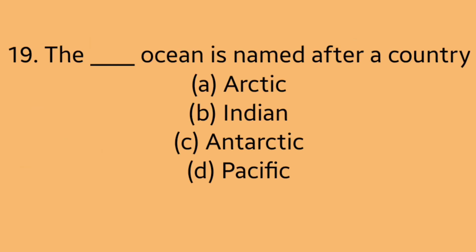Question 19: The ocean named after a country is? Option A: Arctic. Option B: Indian. Option C: Antarctic. Option D: Pacific. Answer is Option B, Indian.